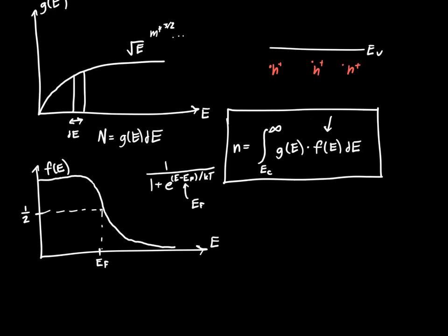This equation cannot be evaluated in closed form — it's known as the Fermi-Dirac integral, and it's tabulated numerically. However, if the Fermi function is sufficiently far from the Fermi energy, it simplifies to a Boltzmann exponential: e^(-(E - E_F) / kT). This is because e^((E - E_F) / kT) becomes much much greater than one. For energies exceeding the Fermi energy by three or four kT, we get maybe one percent error — acceptable for gaining a closed-form expression.